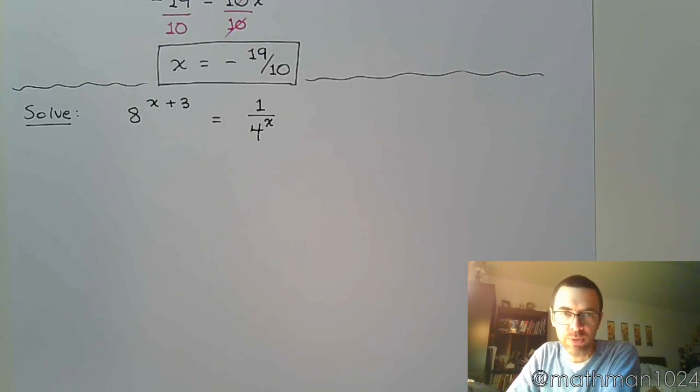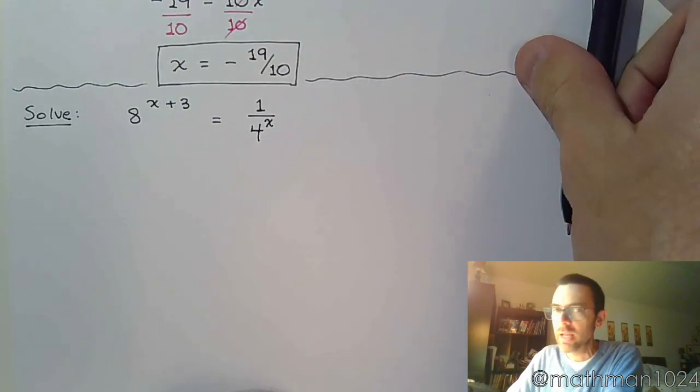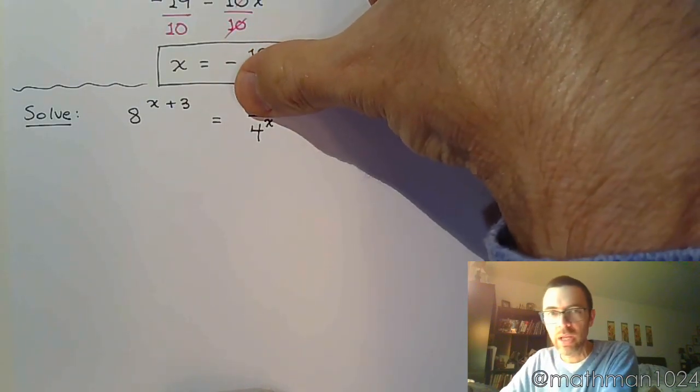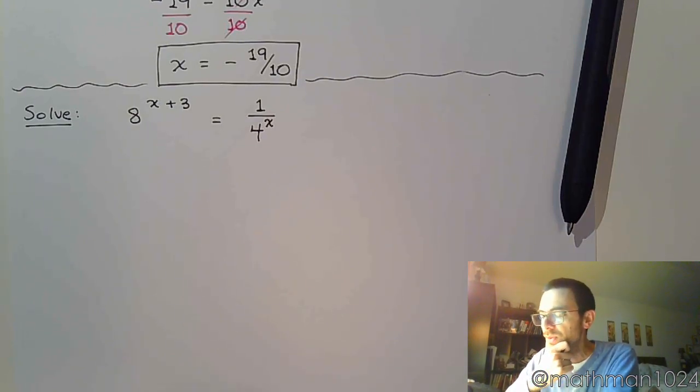All right. So, let's solve 8 raised to the x plus 3 is equal to 1 over 4 to the x. All right. So, we need to find a common base between these guys. And don't worry so much that 4 is in the denominator. We understand that being in the denominator, he's going to end up with a negative power. The big picture is identifying the common base for 8 and 4.